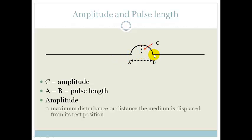From A to B is the length of the pulse, called the pulse length. And that is all you need to know about pulses at the moment.